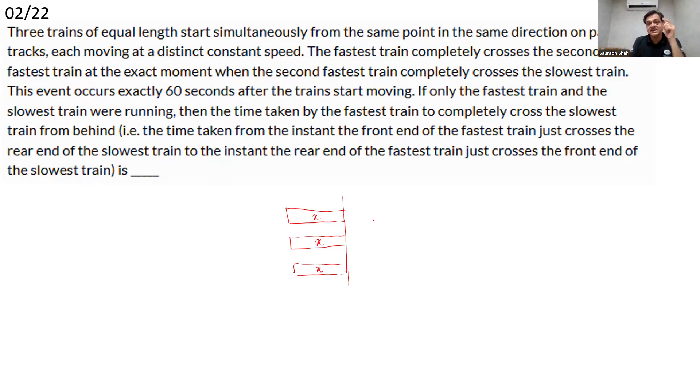After some time, that is 60 seconds which is also mentioned, let's assume that the slowest train has moved a distance d. So the total distance here, let's say this is d. Now the faster, the middle train has just crossed the slower train. So what is the distance moved by the middle train? The distance traveled by the middle train here would become d plus x. And at that time, the fastest train is just overtaking the middle train. So this distance would become d plus 2x.